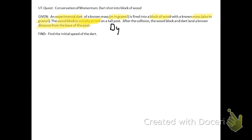What else are we given in the problem? The wood is at rest on a tall post and then the dart lands a known distance from the base of the post. After it hits and it falls off the post, we're going to have a half a parabola projectile motion problem. So we're actually going to have to solve that one first.